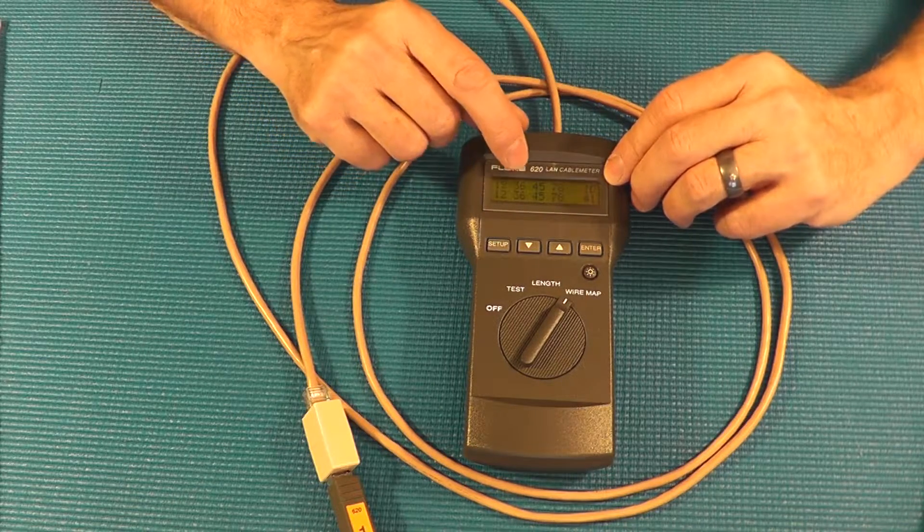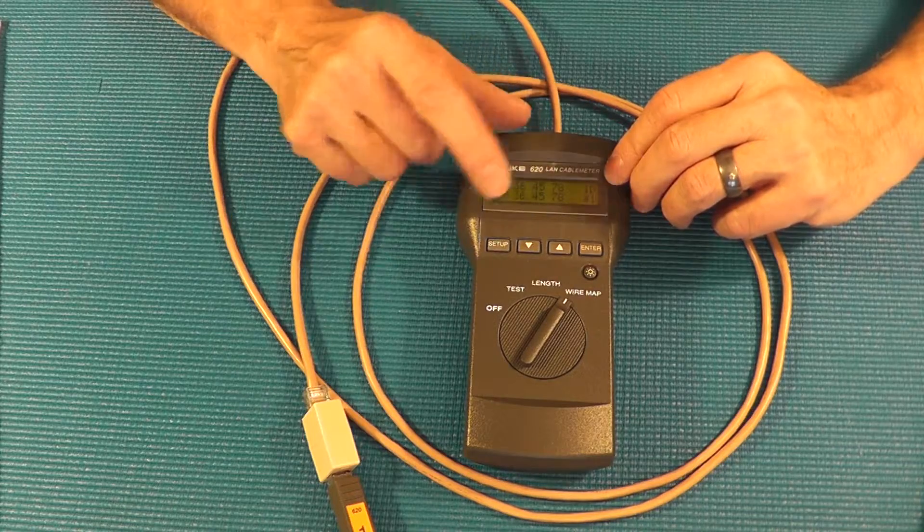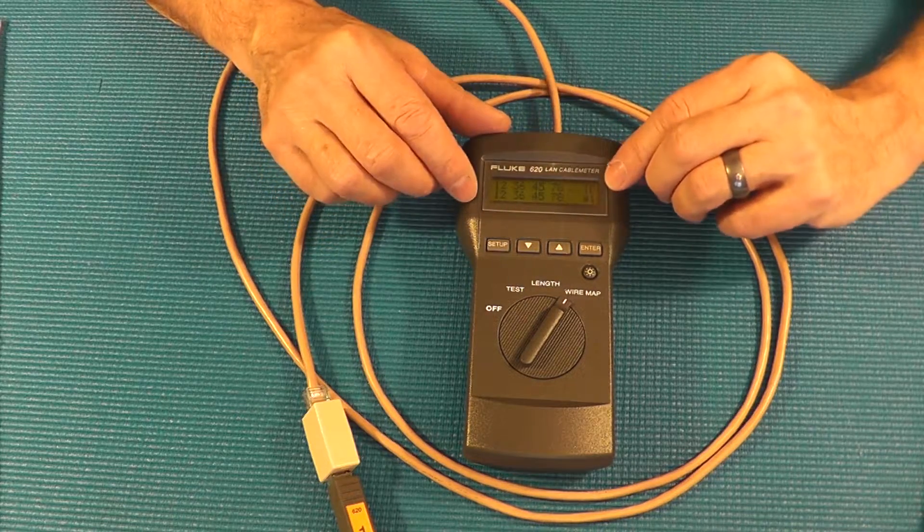The orange pair on one and two, the green pair on three and six, the blue pair four five and so forth. All right so that's a pretty handy thing too.